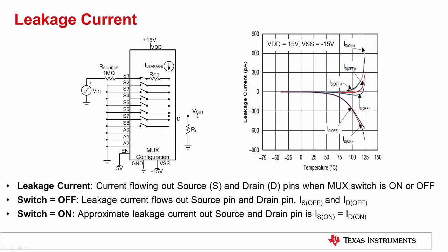The first parameter we are discussing here is leakage current. Leakage current is an important parameter, as it contributes to DC errors both when the switch is on and when it is off. The multiplexer data sheet has many specifications related to leakage current, including leakage current flowing through the source pin, IS, or the drain pin, ID. Leakage current is specified as current flowing through the source, S, and drain pin, D, when the MUX switch is on or off.